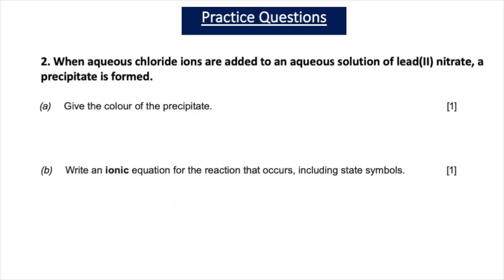Question 2 states that when aqueous chloride ions are added to an aqueous solution of lead-2 nitrate, a precipitate is formed. Part A asks for the colour of the precipitate — white. Part B asks for the ionic equation including state symbols: Pb²⁺(aq) + 2Cl⁻(aq) → PbCl₂(s). There is one mark for the colour and one mark for the ionic equation with correct state symbols.